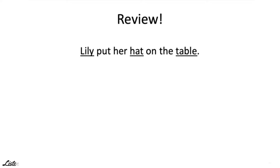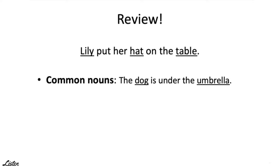Nouns refer to many things and can be classified into different categories. Common nouns refer to any type of people, places, or things. For example, the dog is under the umbrella. Dog is the name of an animal, and umbrella is the name of a thing.